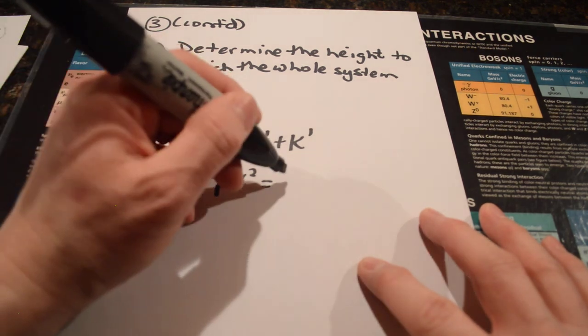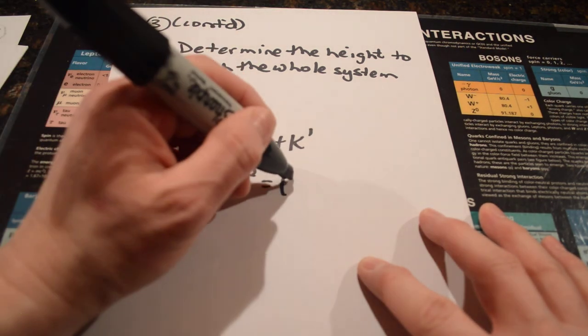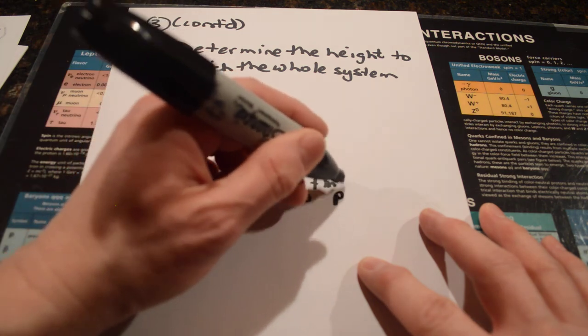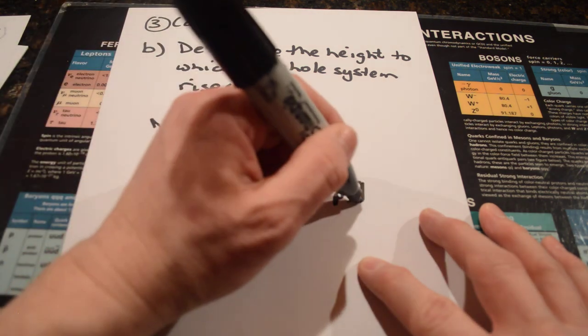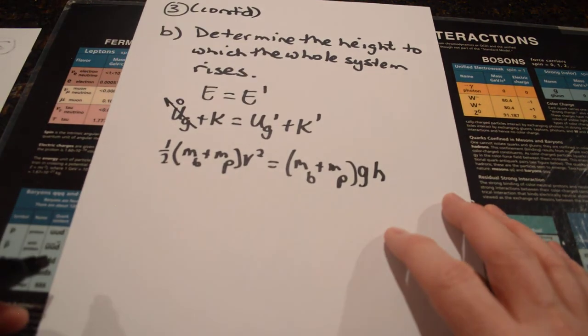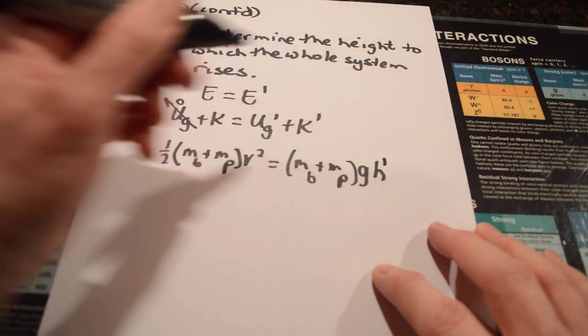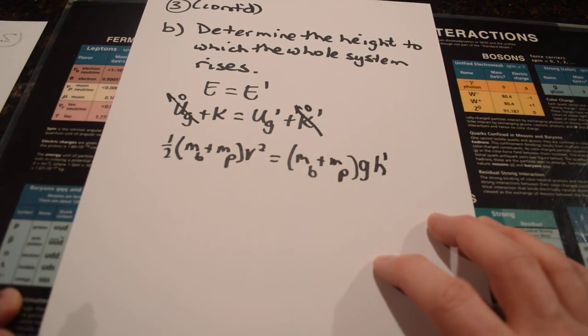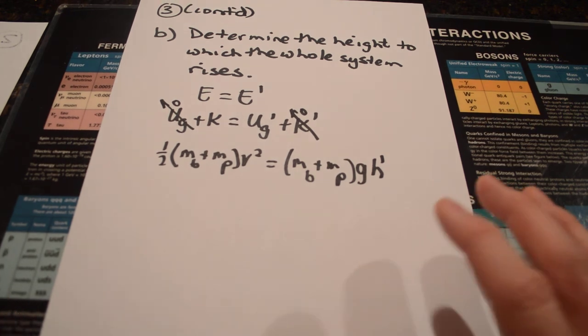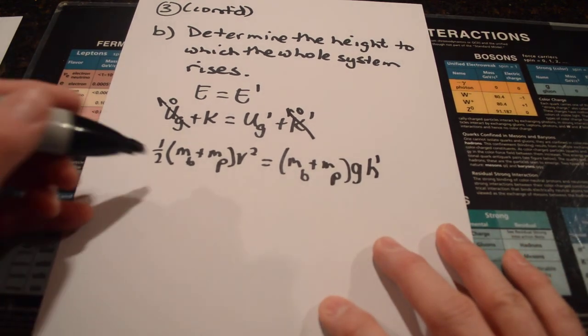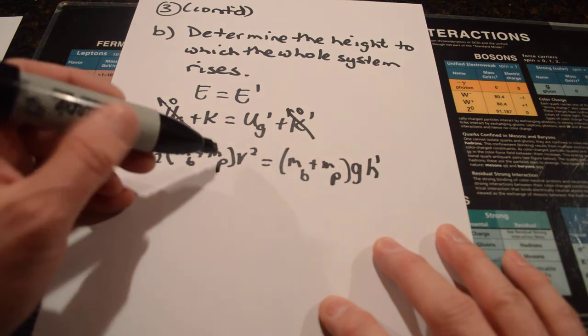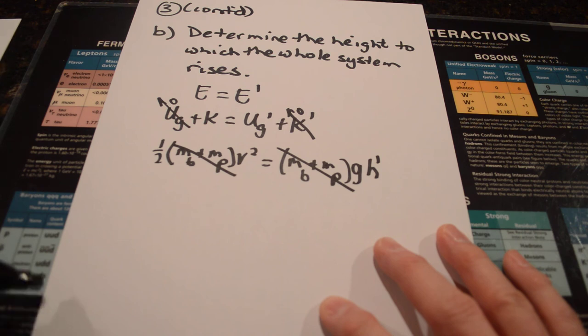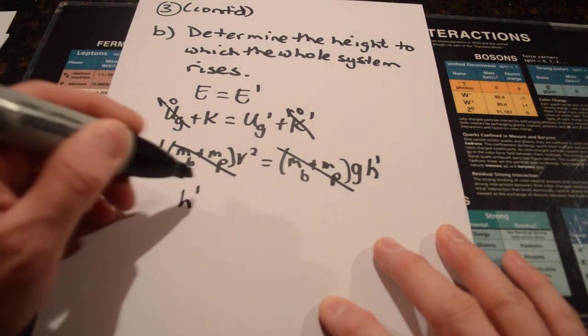At the top, it's going to have some potential energy due to gravity, which would be, again, the mass of the ball plus the mass of the pendulum. They're working together times g times any height that is raised to. That's the height that you want to find. And then, the highest point, wouldn't it be correct to say that it has no kinetic energy because it's not moving anymore? Now, the interesting thing and the nice thing is that the masses are the same on either side, so they can cancel.